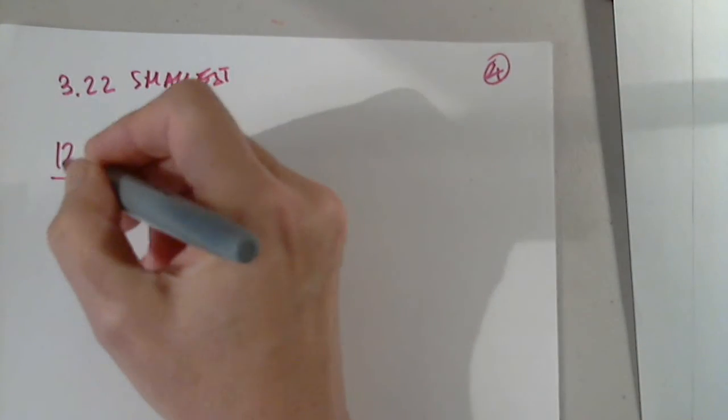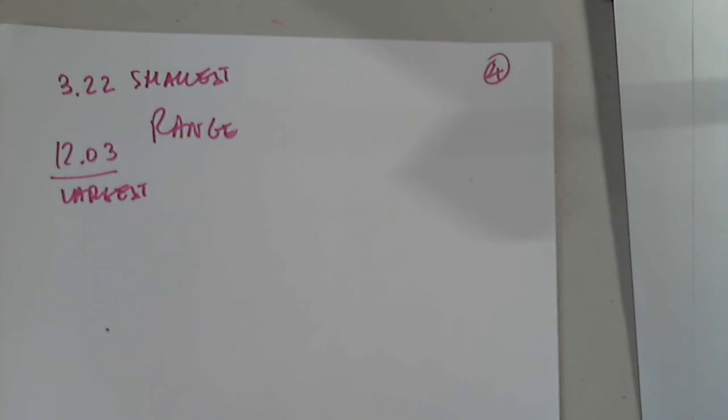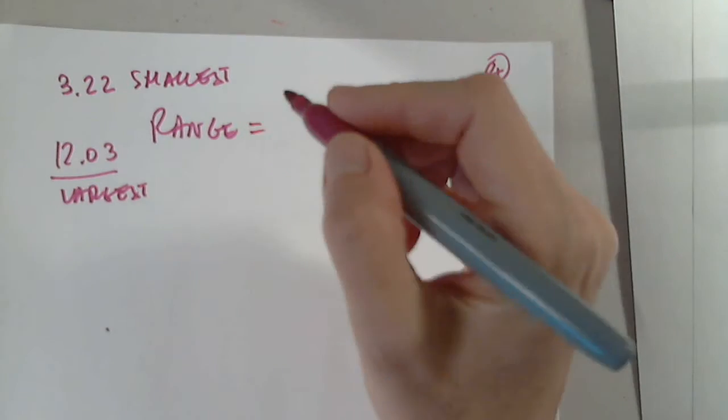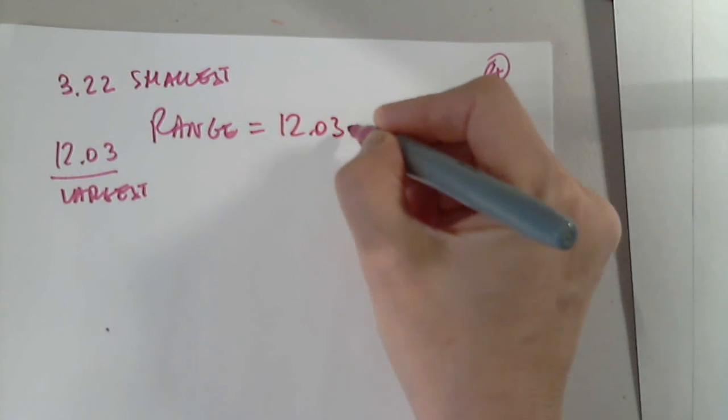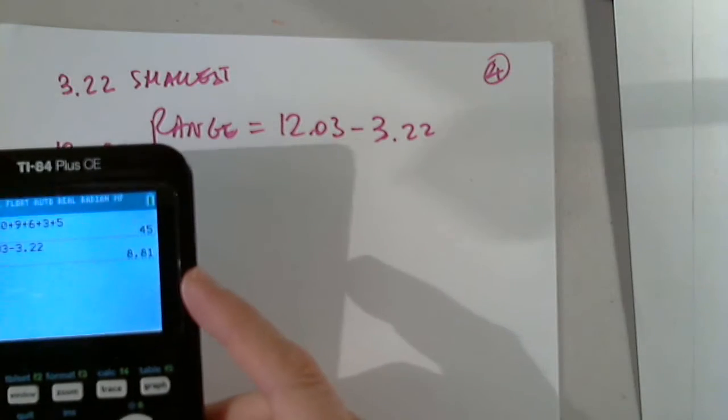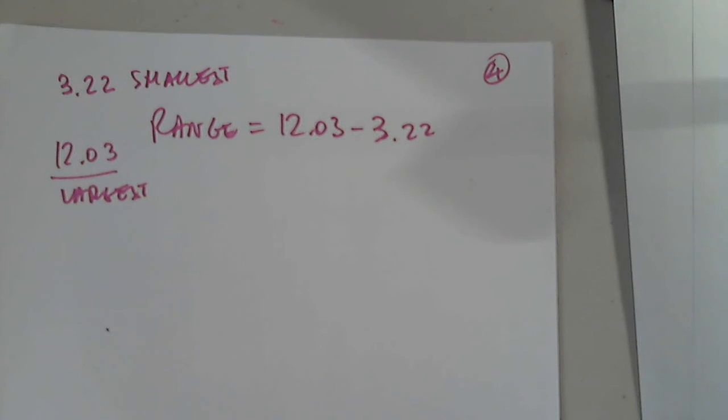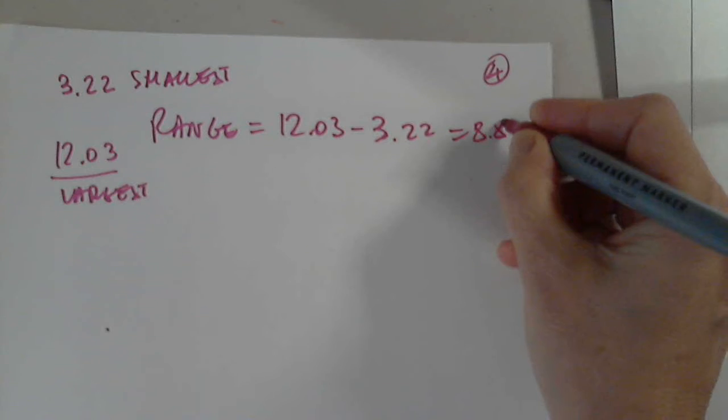This one is the smallest, and this one is the largest entry in the data set. So what is the range? The range is the difference between 12.03 and 3.22. And when you subtract 12.03, you don't need the calculator. We don't need the calculator for that, but 3.22. I got 8.81. So the range of the data is 8.81.